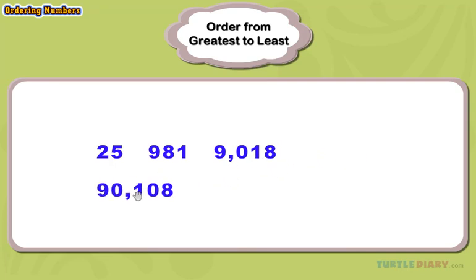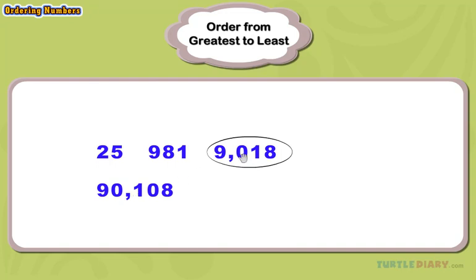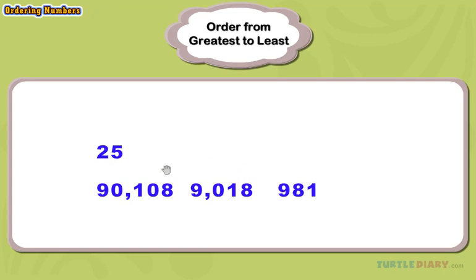Then we order the number with four digits, or the number whose place value is a thousand. We continue this pattern until all four numbers have been ordered from greatest to least.